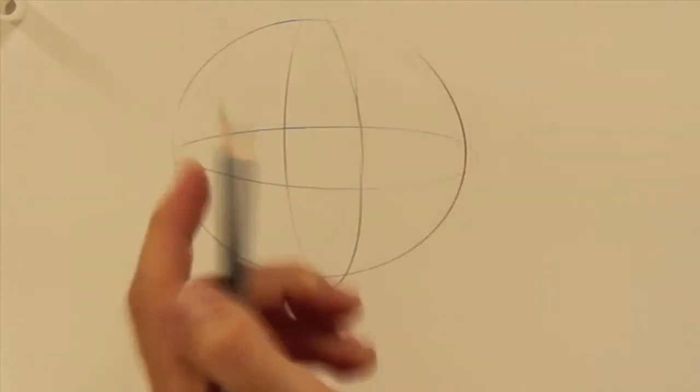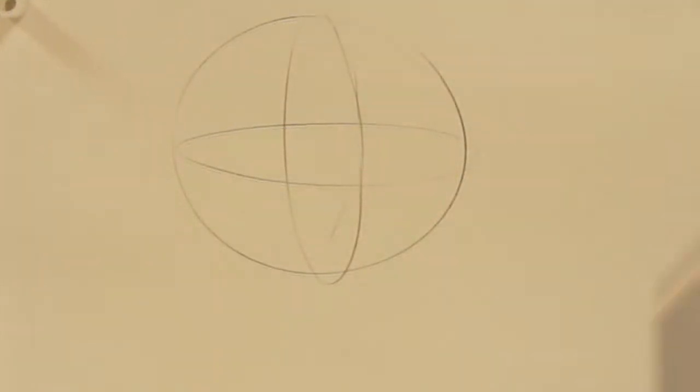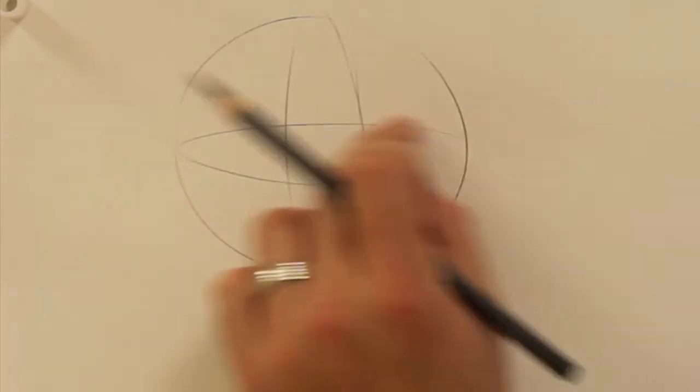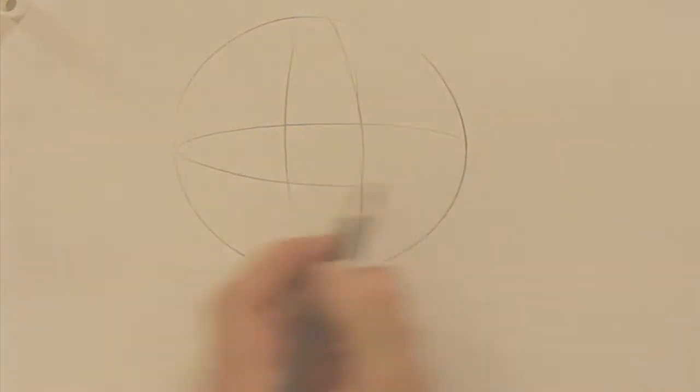These lines actually serve to give the eye some information. If I were to cut this sphere in half, this is what it would look like. It starts to look like half of a ball.